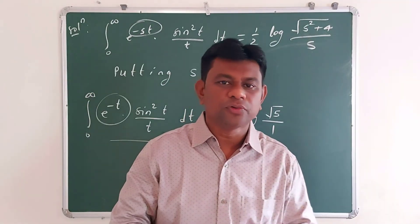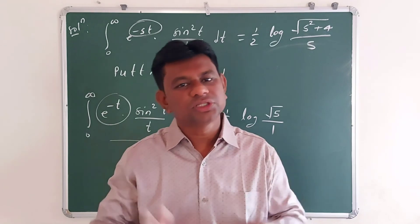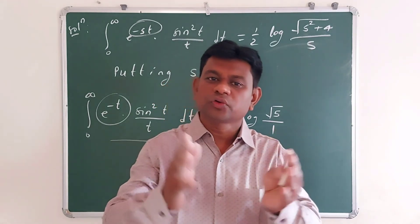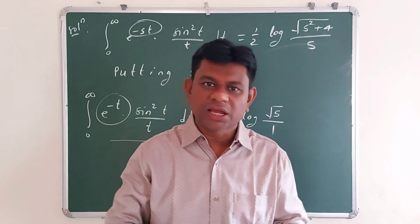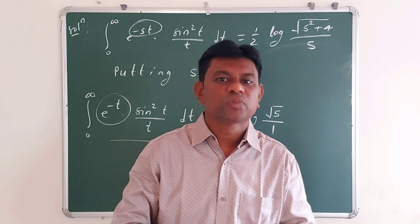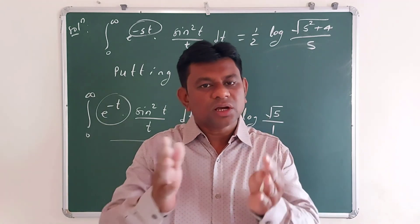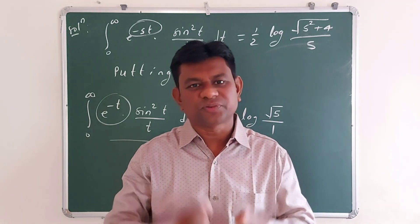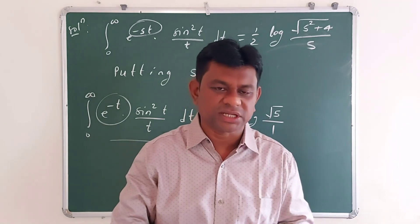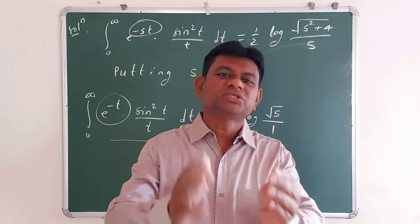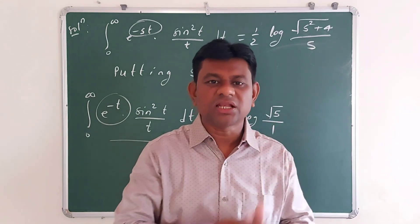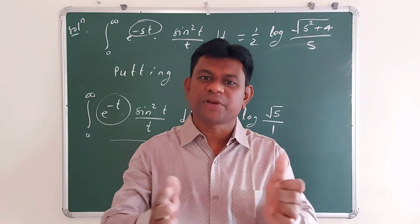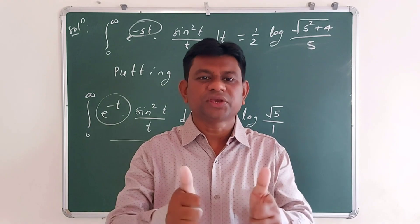Therefore, the integral from 0 to infinity of e to the power minus t times sin squared t over t dt is equal to 1 over 4 log 5. Hope all of you have understood this Laplace transform technique to evaluate the definite integral. In the upcoming lecture, we will solve some more problems based on this technique. Please subscribe to the channel and let me know your comments and feedback. Thank you.